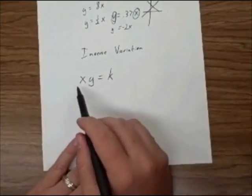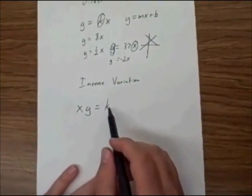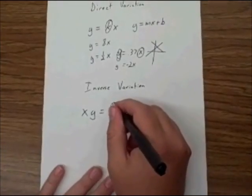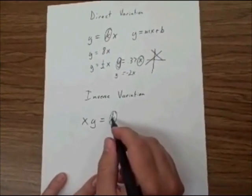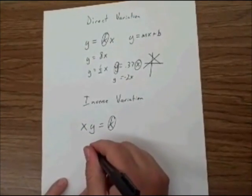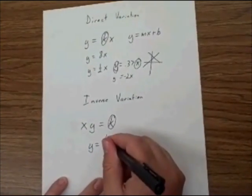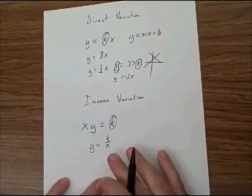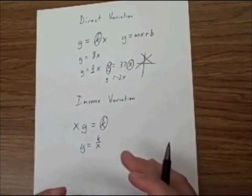Inverse variation is represented by xy equals k. k is, again, a constant. But this means x times y is going to equal this. So in order to solve this where you can graph it on a calculator, this means it's going to look like y is equal to k over x. This is more of a real-world situation where you and your friends go out on Halloween.